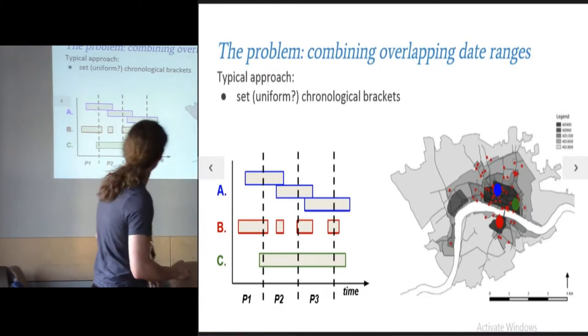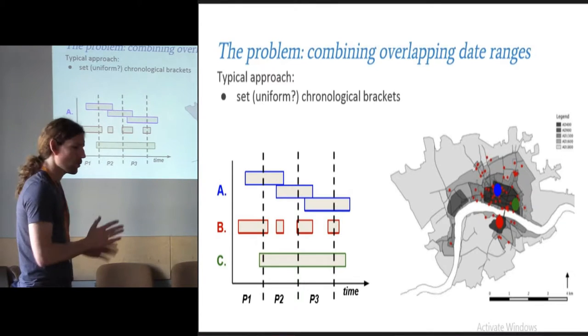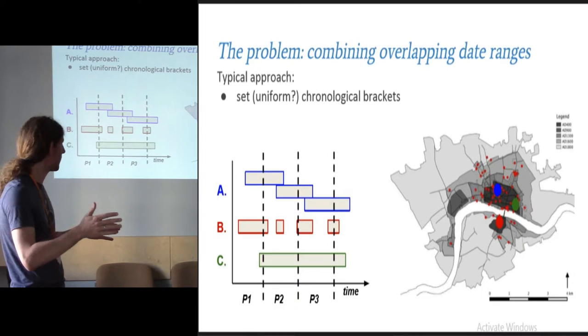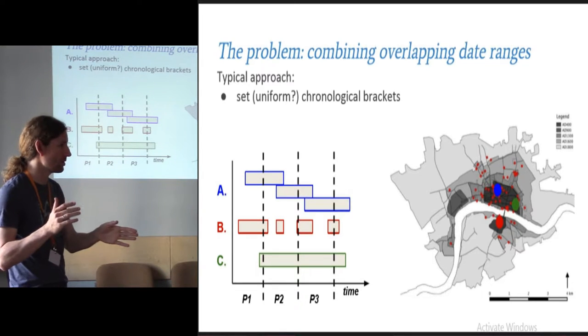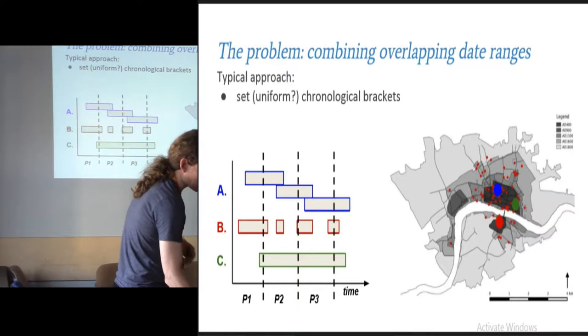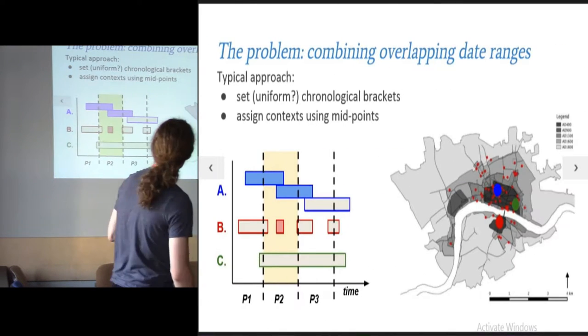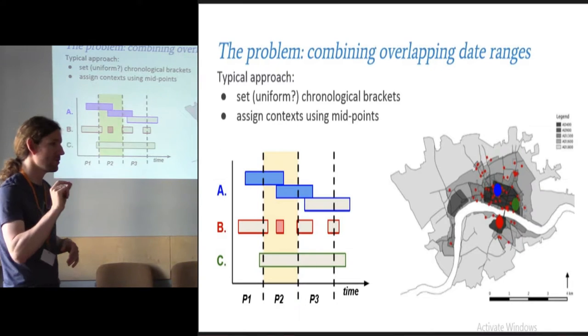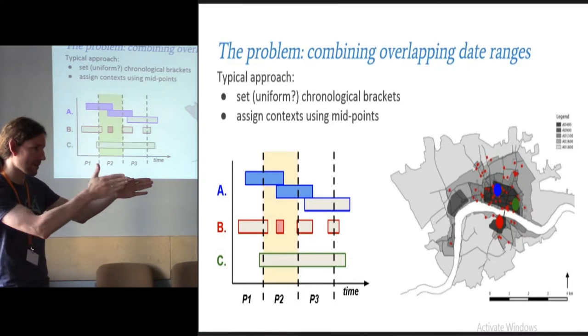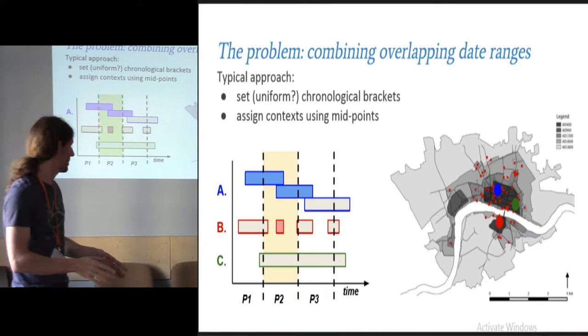Traditionally, people would do this sort of thing, where you probably split it up into bins. They might be centuries, they might be uniform, they might actually be more based around pottery chronology or major events, so they might not be uniform. And then you do something kind of rough, like taking the midpoint of each phase or each context thing. If the archaeologist says it lasts between here and here, let's take the middle and see which bracket that falls into.